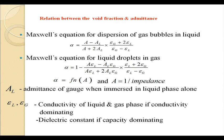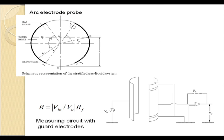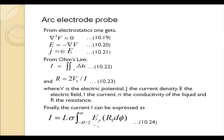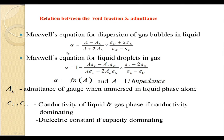For micro systems, arc electrode probes are usually used. You can see this particular arc electrode probe design, which is used in macro systems. For these arc electrode probes, based on electrostatics, the following derivation can be done from which we can find a relationship between void fraction and admittance for two different cases: dispersion of gas bubbles in liquid, and liquid droplets in gas.